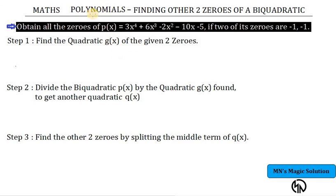Hi students, polynomials - finding other two zeros of a biquartic type problem. So biquartic means x to the power 4. The given polynomial has 4 zeros, you call it as what? Biquartic.